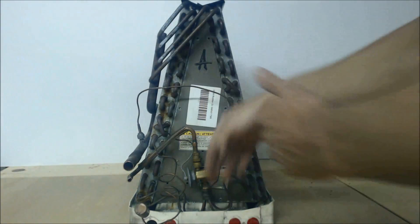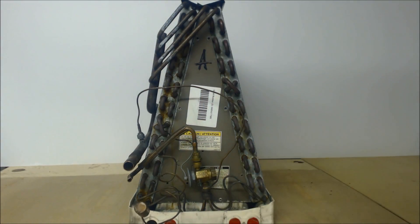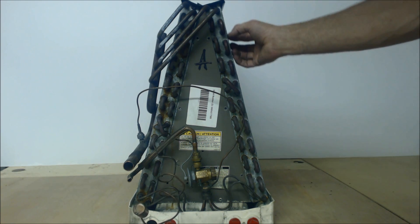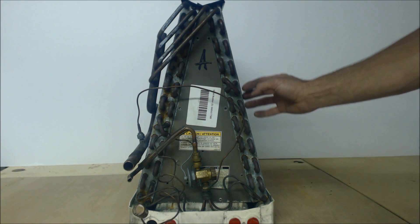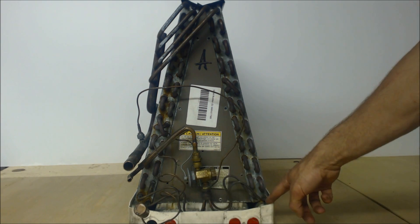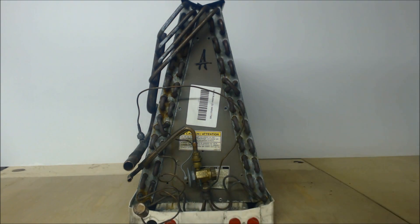What happens is the humidity gets attracted to these fins and drips down into the condensate pan. You take your drain down from the lowest point.